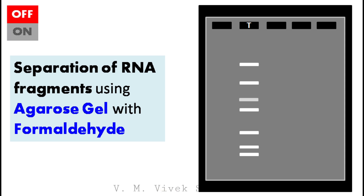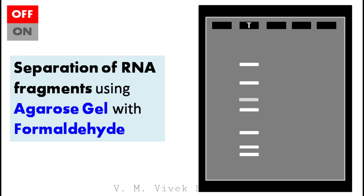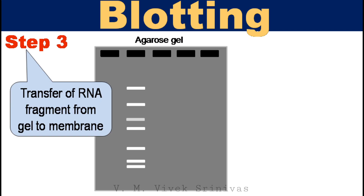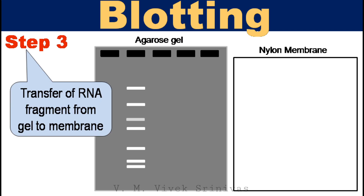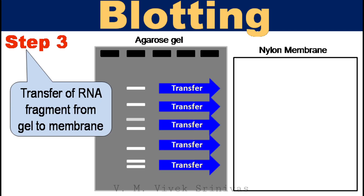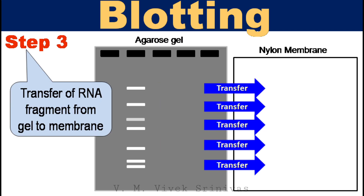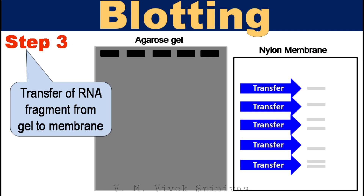These agarose gels are fragile and delicate to handle, so it is not possible to do further processing like DNA probe hybridization in this gel matrix. Therefore, in step 3, the separated RNA fragments are transferred from the gel to the nylon membrane.